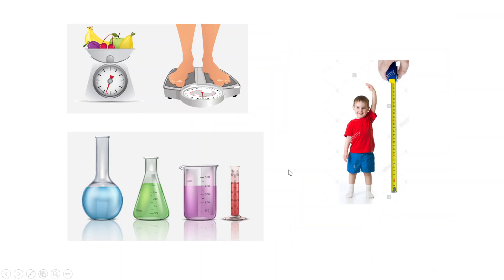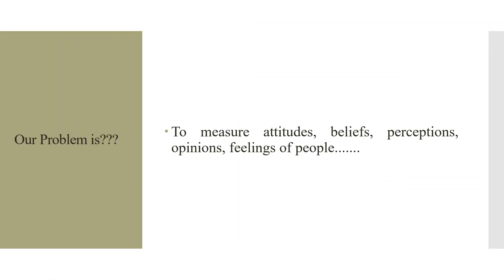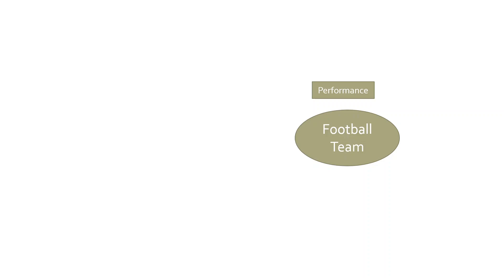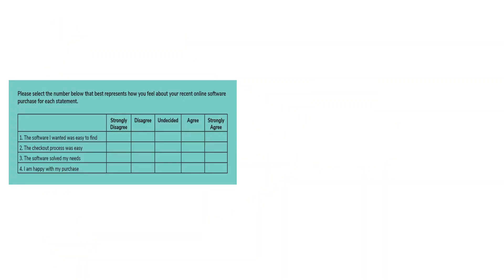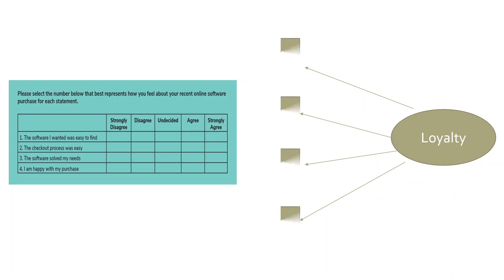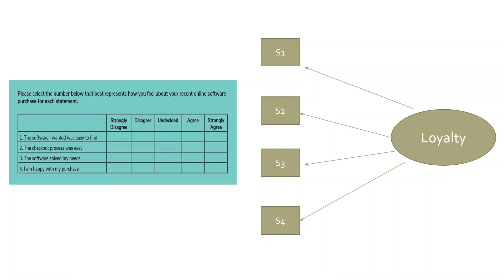We have scales to measure height, weight, and liquid. But in social science, our problem is to measure attitudes, beliefs, perceptions, opinions, and feelings of people. For example, to assess the performance of a football team with four players — Joe, Sue, Mark, and Dennis — their individual performances give us the overall team performance. Similarly in research, we have constructs like loyalty and satisfaction which we cannot measure directly. These are captured with the help of statements S1, S2, S3, and S4. The perceptions of respondents are captured on 5-point Likert scales: strongly disagree, disagree, undecided, agree, and strongly agree. In this scenario, we use structural equation modeling.